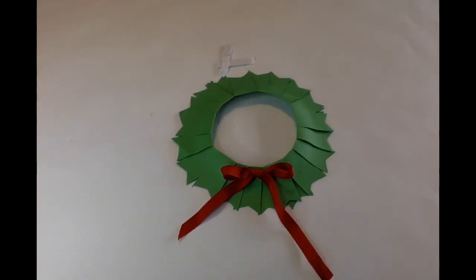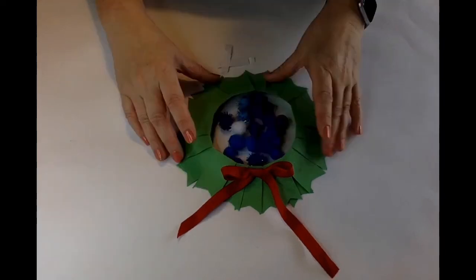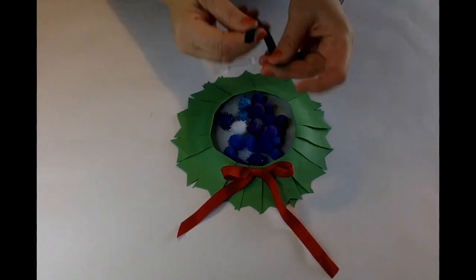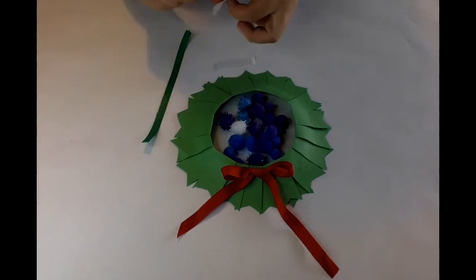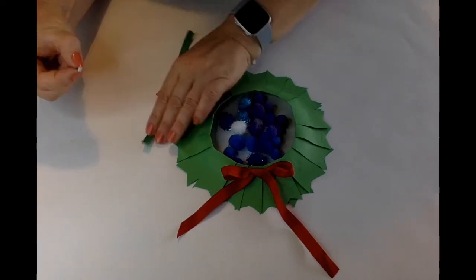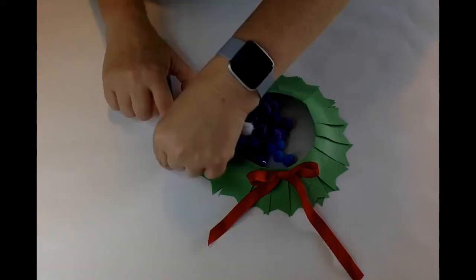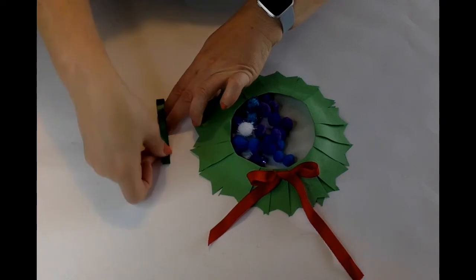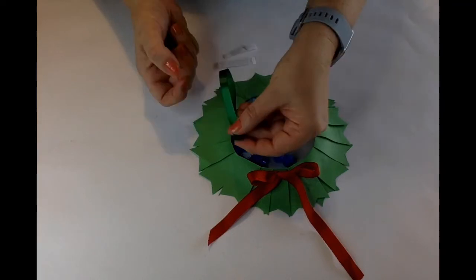Now I'm going to get the pom-poms. I might put them in the middle to stop them rolling about. I've got all blues but you'll have a mixture of colors in yours. First, I'll put the hanger on. What you do is get one of your glue dots, pop it on the end like so, take the back off, and then make a loop and stick it onto the glue dot there. So you'll have a hanging loop.